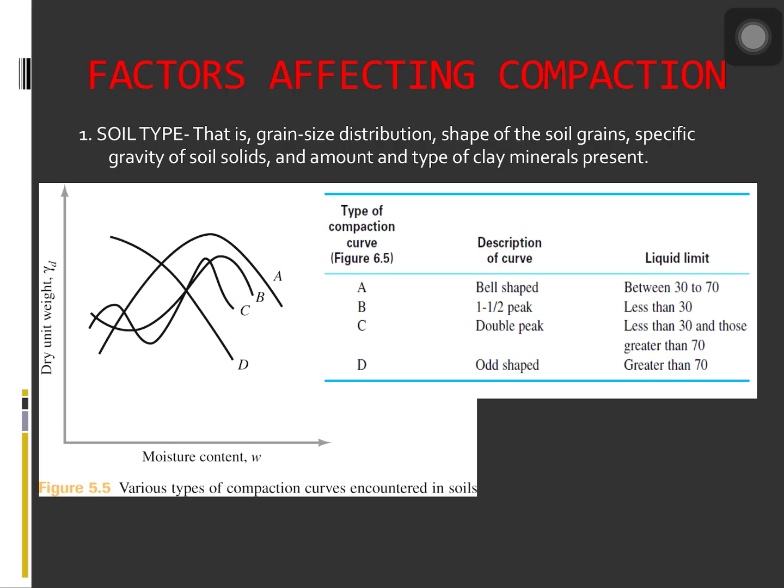A while ago, we talked about how the moisture content had a great influence on the degree of compaction achieved by a given soil. Besides moisture content, other important factors that affect compaction are soil type and compaction effort. The importance of each two factors will be described.